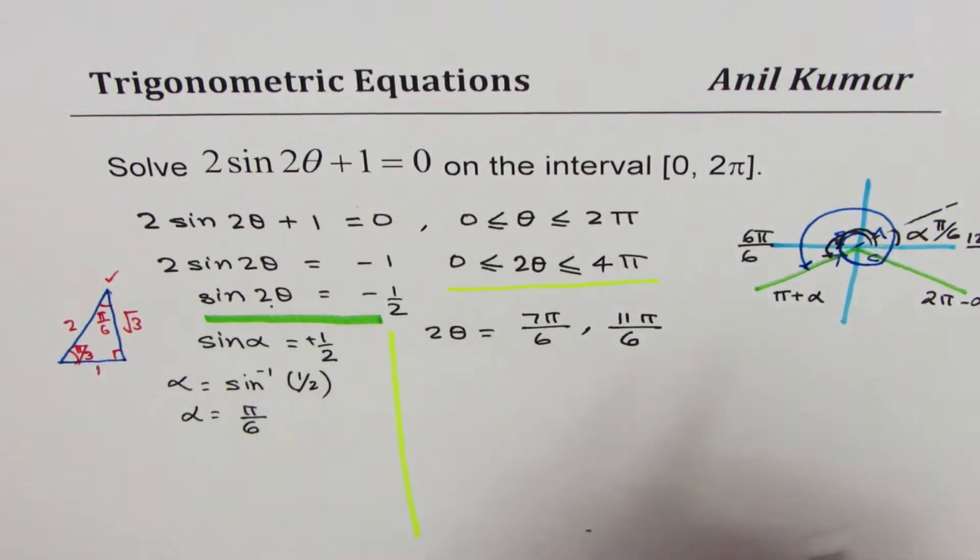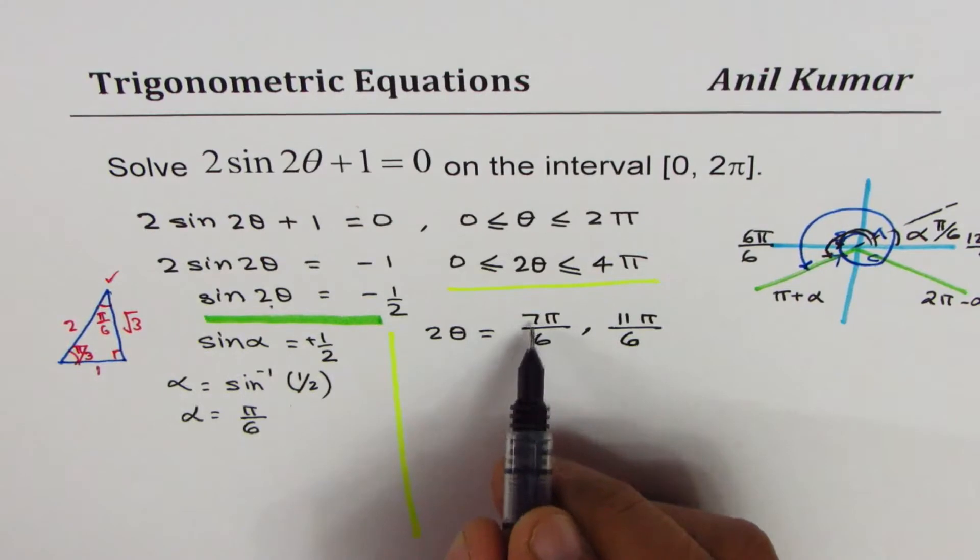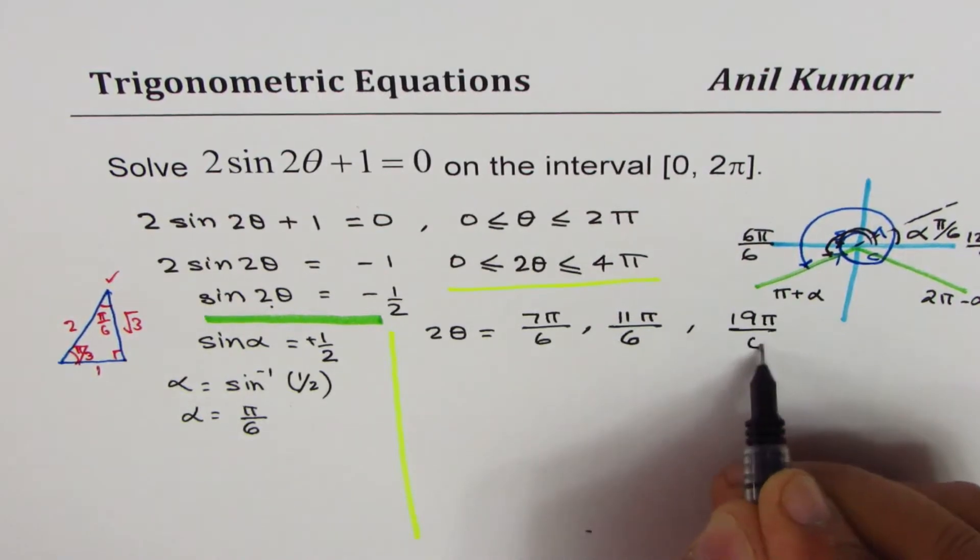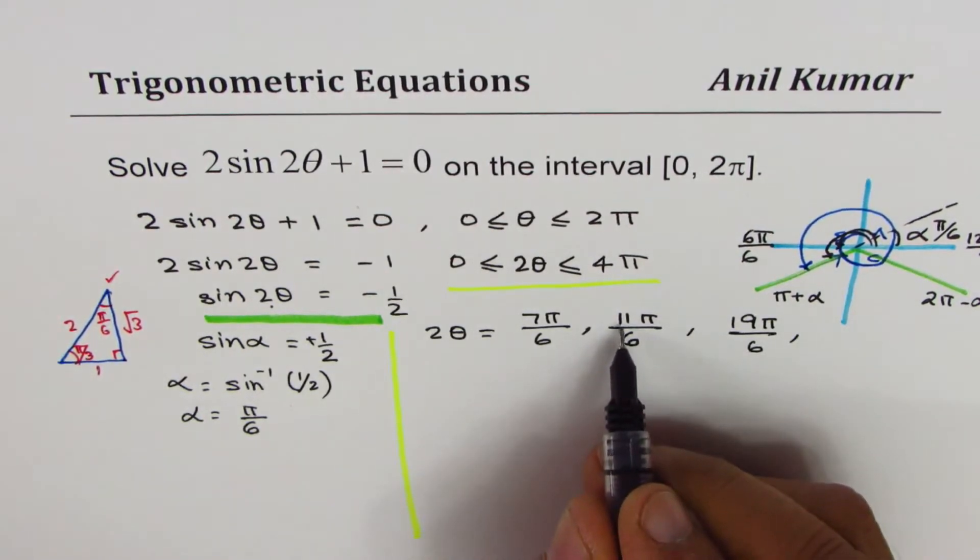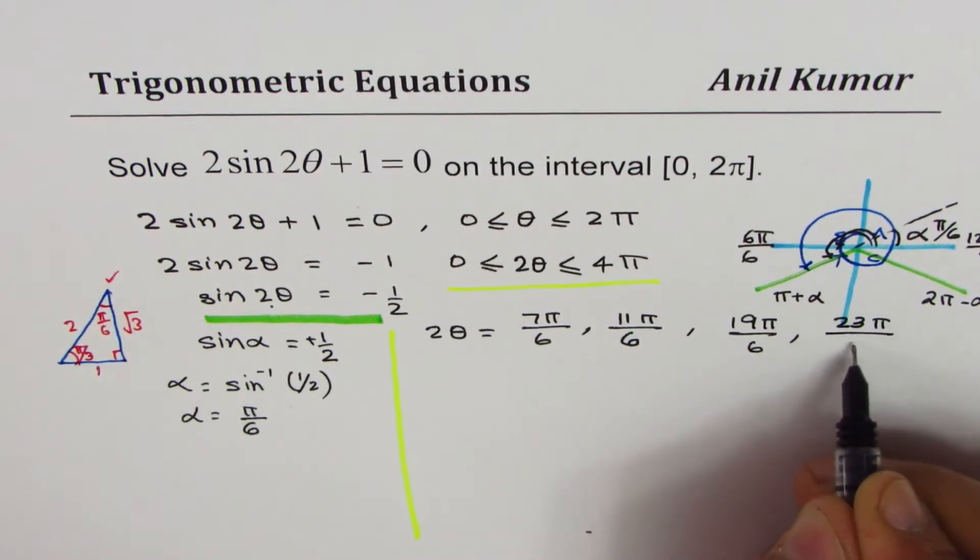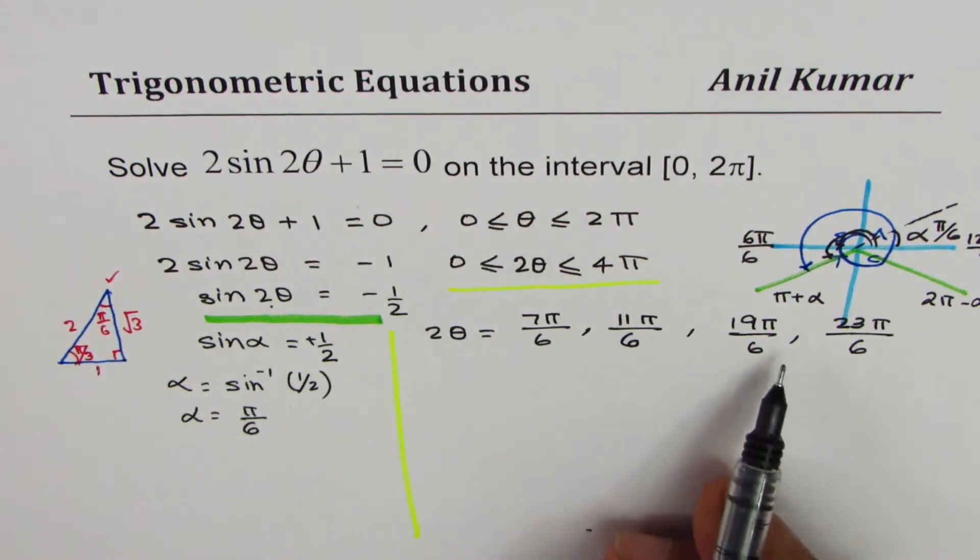2π means 12π/6. 7 + 12 is 19, so we get 19π/6, and 12 + 11 is 23, so 23π/6. So we get actually four options.